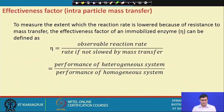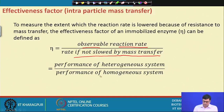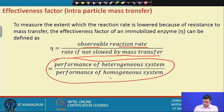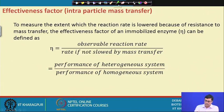Going back to the effectiveness factor: it is the observed reaction rate divided by the rate if not slowed by mass transfer. This is the ratio of the performance of the heterogeneous system divided by the performance of the homogeneous system. When eta = 1, the heterogeneous system equals the homogeneous system; when eta < 1, there is a mass transfer limitation problem.